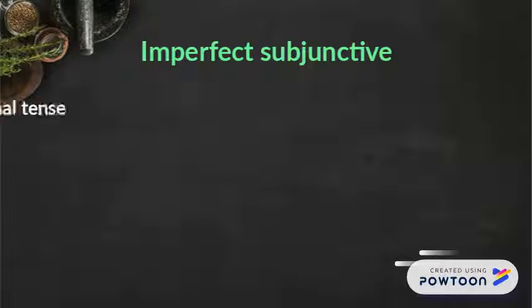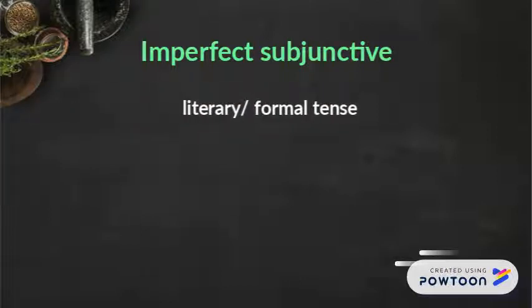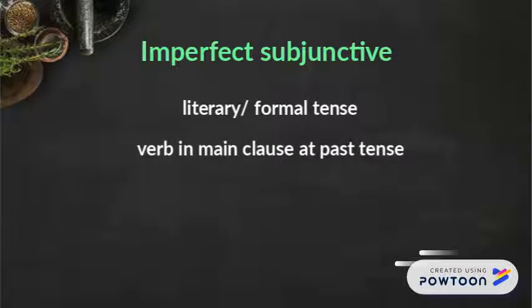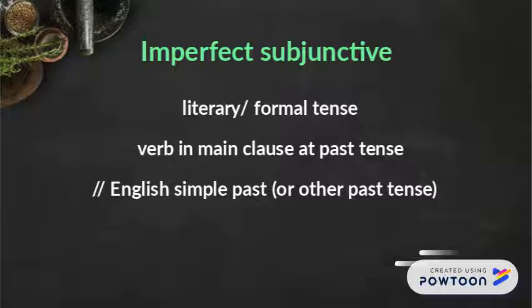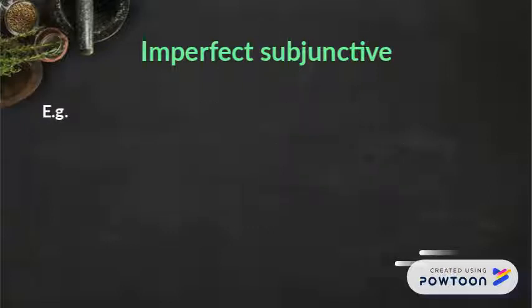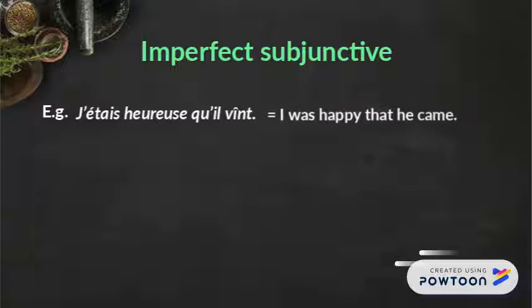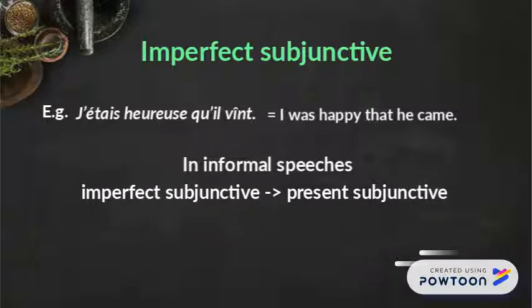The imperfect subjunctive is a literary or formal tense. It is used when the verb in the main clause is at a past tense. It corresponds to the English simple past or the best-fitting past tense, or might/would to express uncertainty. For instance, 'j'étais heureuse qu'il vînt' means 'I was happy that he came.' In informal speech, the imperfect subjunctive is replaced by the present subjunctive.